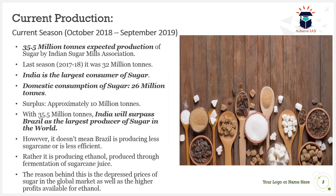India is the largest consumer of sugar, consuming 26 million tons every year. Going by these figures, this year the surplus would be approximately 10 million tons. In terms of quantity of production, this year India will surpass Brazil, which was until now the largest producer of sugar. India will become both the largest producer and the largest consumer.